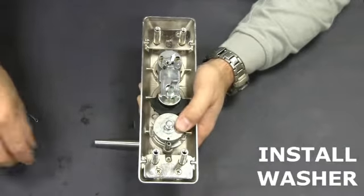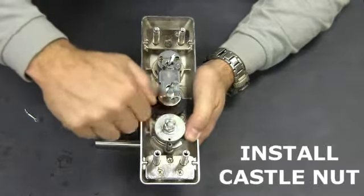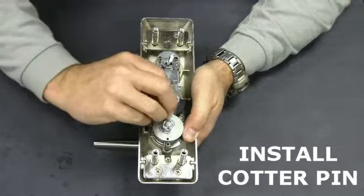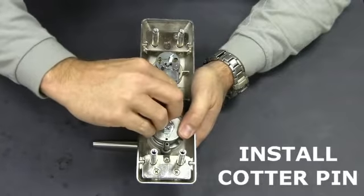Now install the washer. Install the castle nut. Do not over tighten. Verify by ensuring the lever returns horizontally on its own.